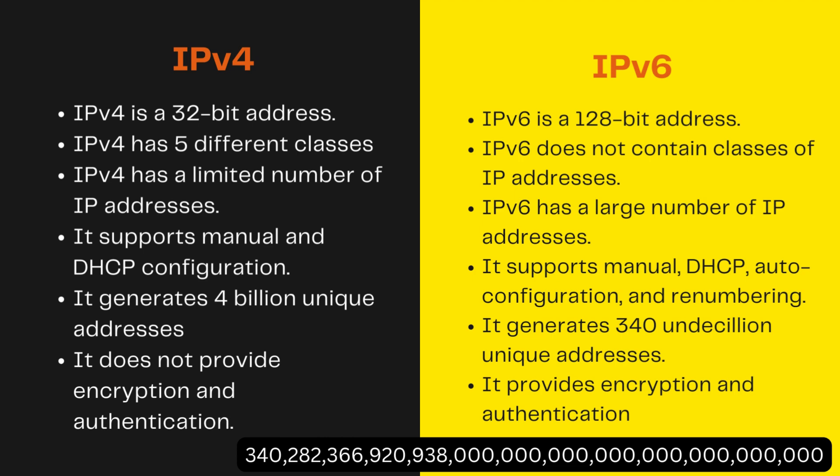IPv4 is split into 5 classes but IPv6 does not contain any classes. Classes define exactly where the IP address can be used — for example, there are private address classes and public address classes. While version 4 has a limited number of IP addresses, version 6 has a very large address space. IPv4 supports manual and DHCP configuration, while IPv6 also supports auto-configuration and renumbering. Additionally, IPv4 does not provide encryption and authentication, whereas IPv6 provides encryption and authentication for added security.